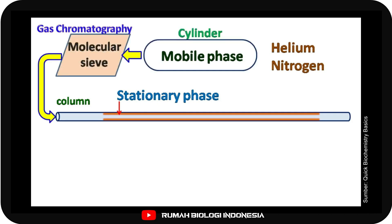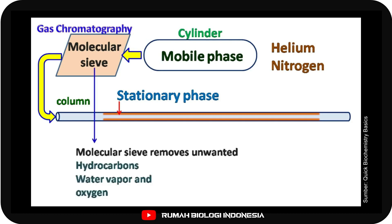The mobile phase gas is kept in a cylinder which is connected with the column via molecular sieve. The molecular sieve separates the unwanted hydrocarbons, oxygen and water vapor that may interfere with the test sample during analysis.